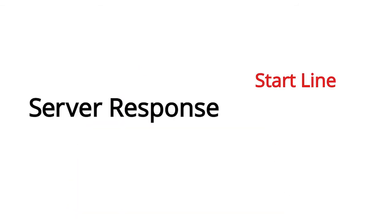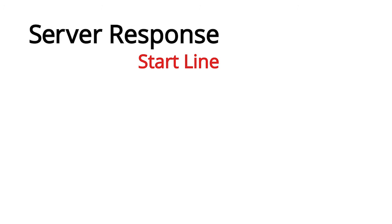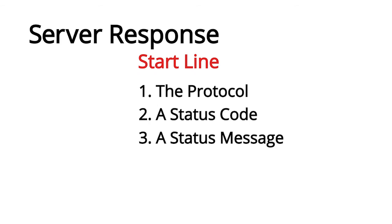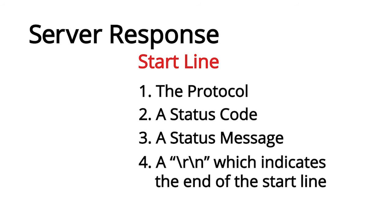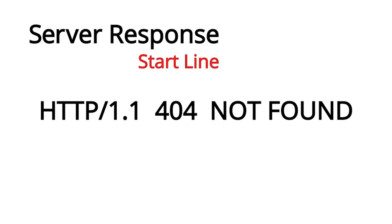After you send the request, the server will respond with a similar message called the server response. The server response has a start line, optional headers, and an optional content body — very much like the client request. The server response start line is made up of four elements: the protocol, a status code, a status message, and a \r\n. For example: HTTP/1.1 200 OK. Another one you've likely seen from your web browser is HTTP/1.1 404 Not Found — the famous 404 error.